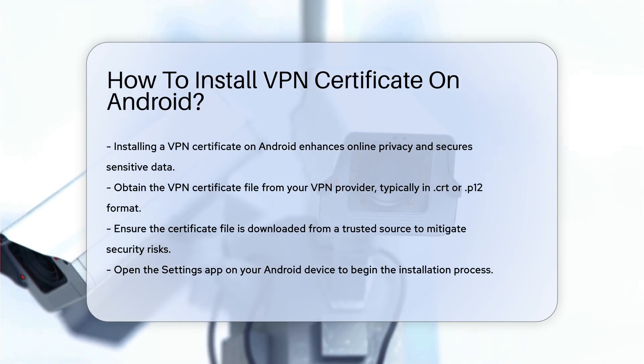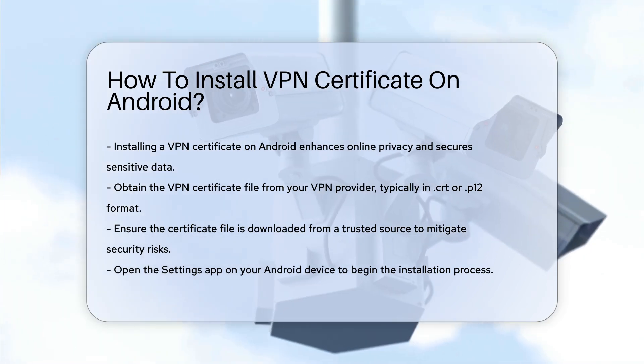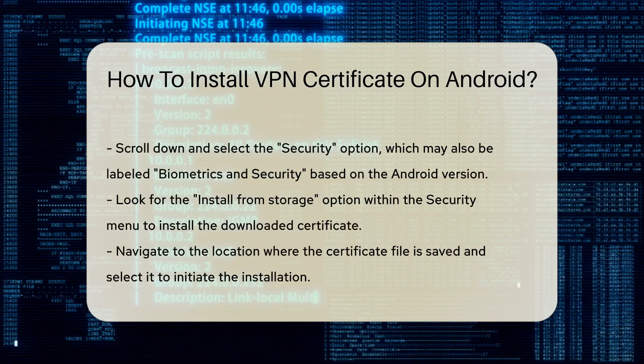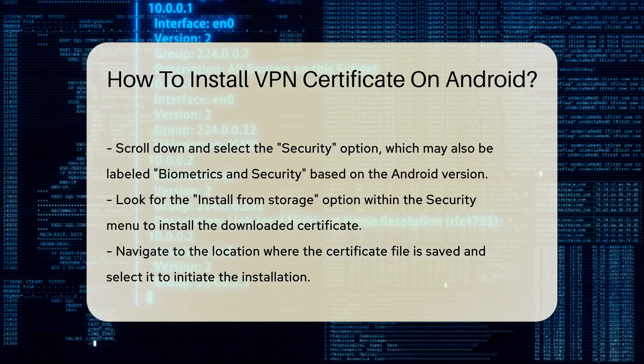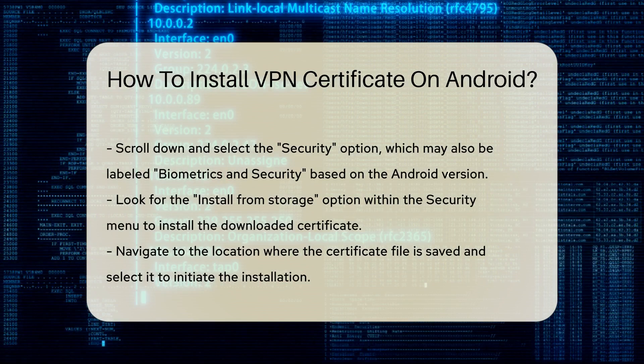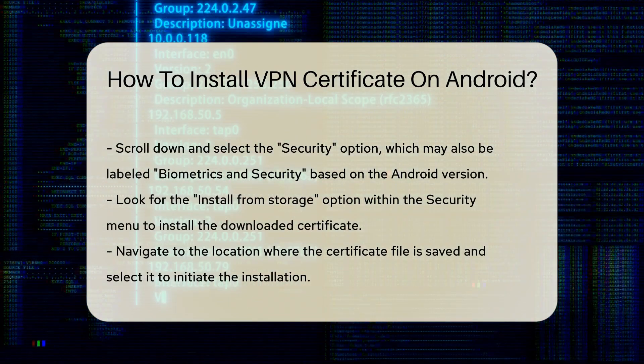Next, open the Settings app on your Android device. Scroll down and select the Security option. Depending on your Android version, this may also be labeled as Biometrics and Security.